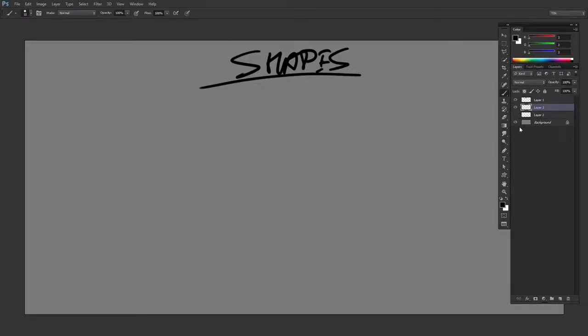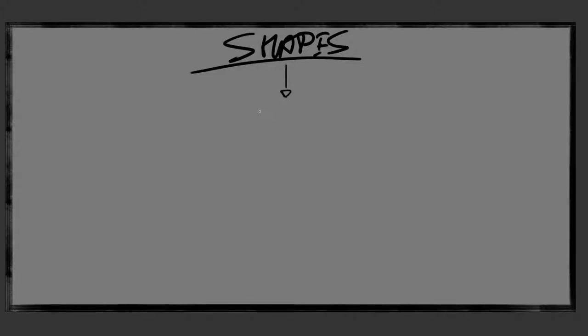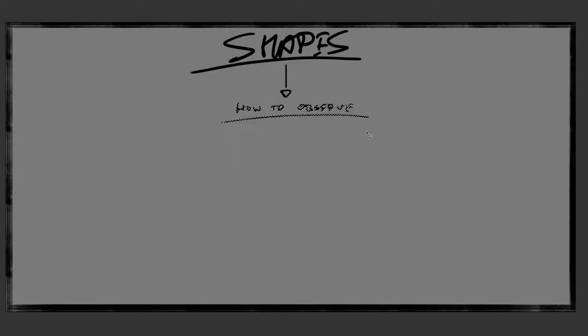Alright guys, welcome back. We're again going to be talking about shapes. There are a few points that weren't covered last topic — it was too much to cover — so we're going to do that today. That is basically how to observe shapes, or how to see. Once you start doing this exercise, you are instantly going to be really good at observing how things are wrong.